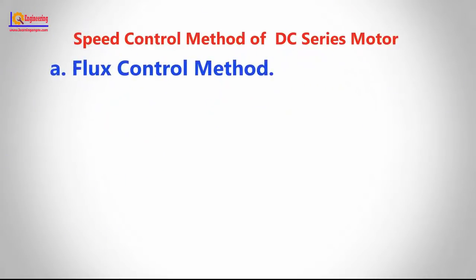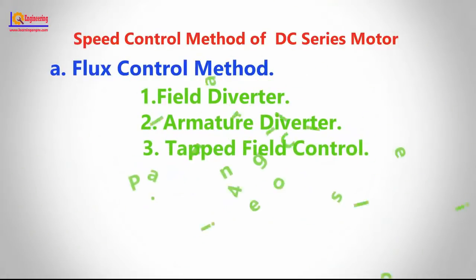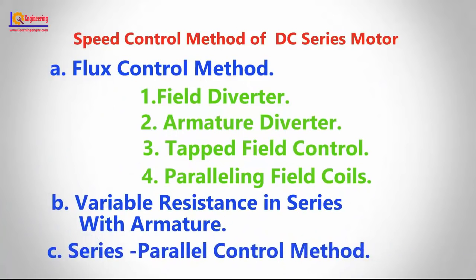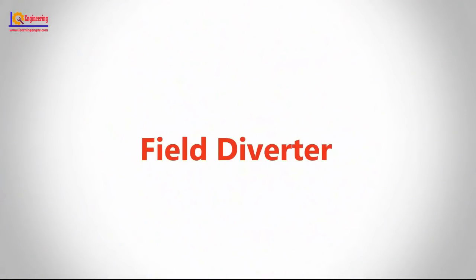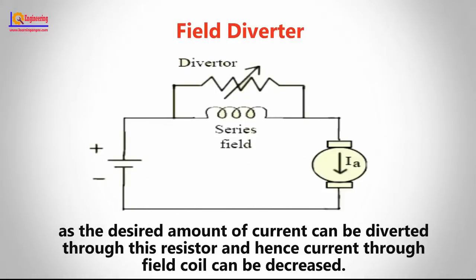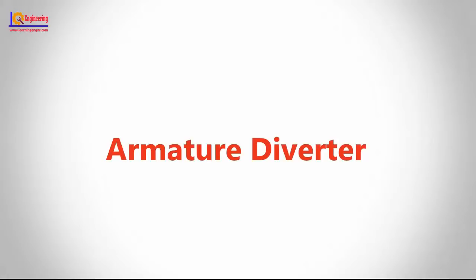Speed control methods of a DC series motor are as follows. Flux control methods are of four types: 1. Field diverter, 2. Armature diverter, 3. Tapped field control, 4. Paralleling field coils. In the field diverter method, a variable resistance is connected in parallel to the series field. This variable resistor is called a diverter, as the desired amount of current can be diverted through the resistance, and hence current through the field coil can be decreased.